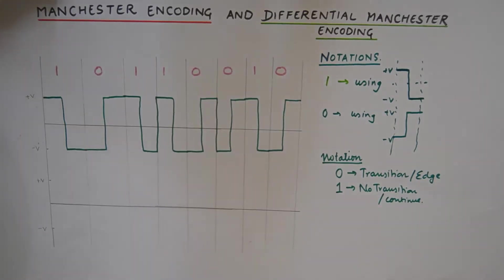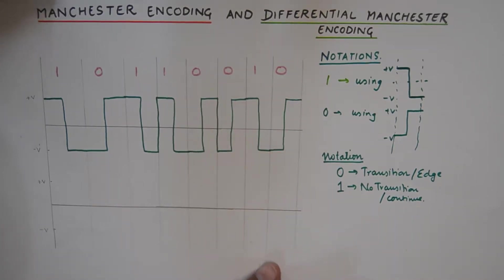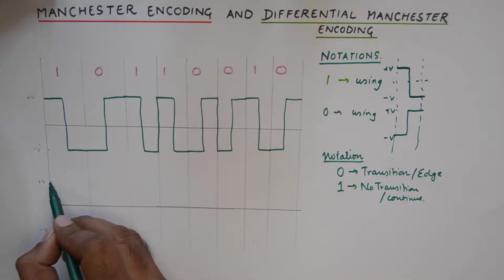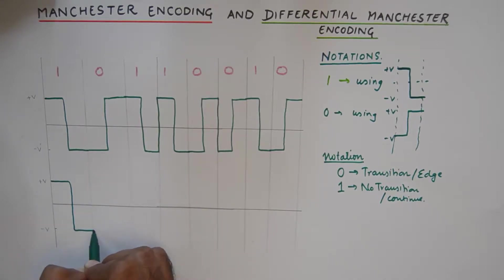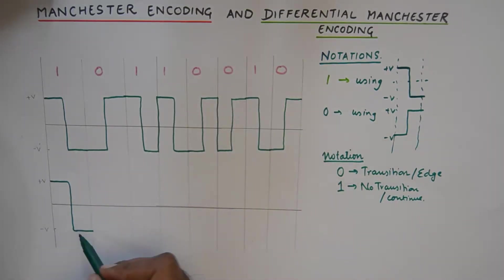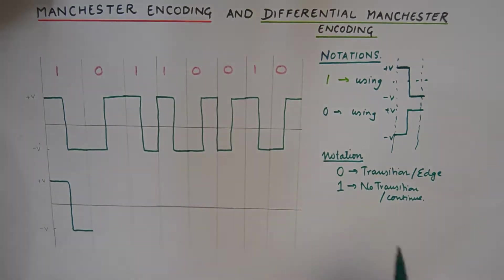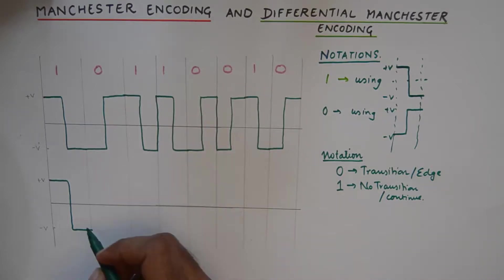I'll show you that with an example. Now when we talk about the same code representation in differential Manchester encoding, we'll start off from one in the normal way. One will stay plus V for half the bit period and we'll go to minus V for the next bit period. Now when we go to zero we need to do a transition, so a transition will be something like this going from minus V to V.